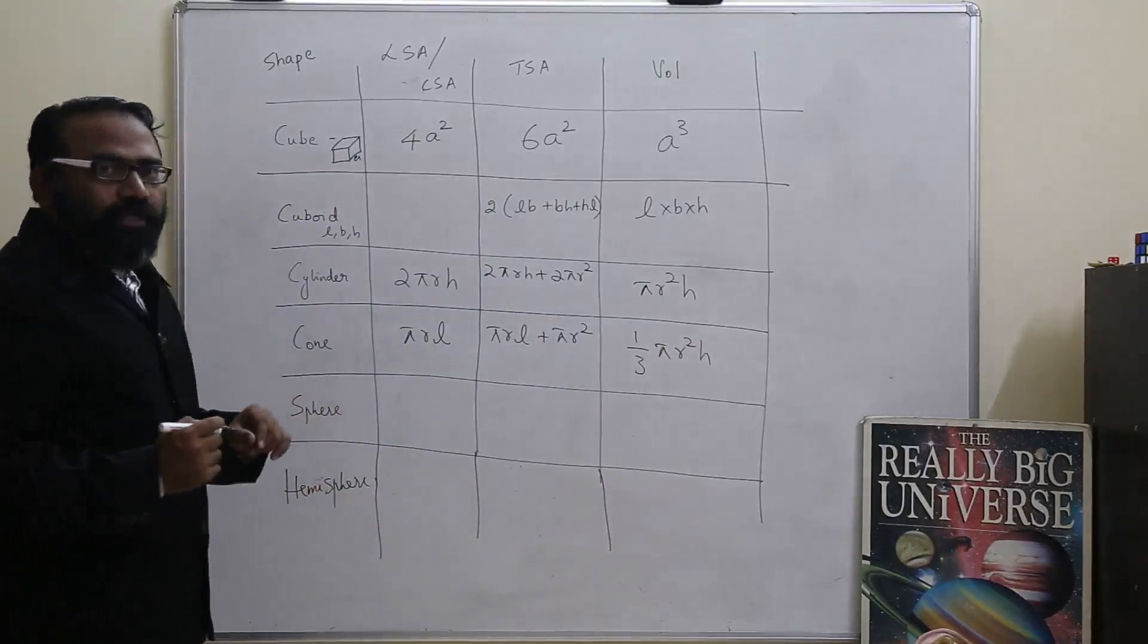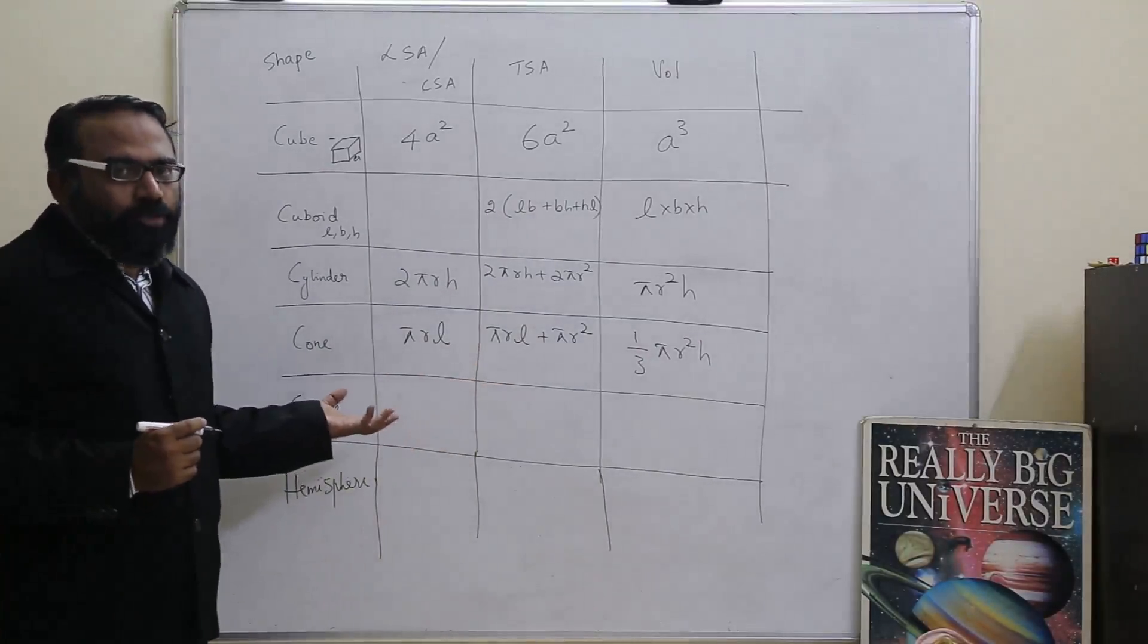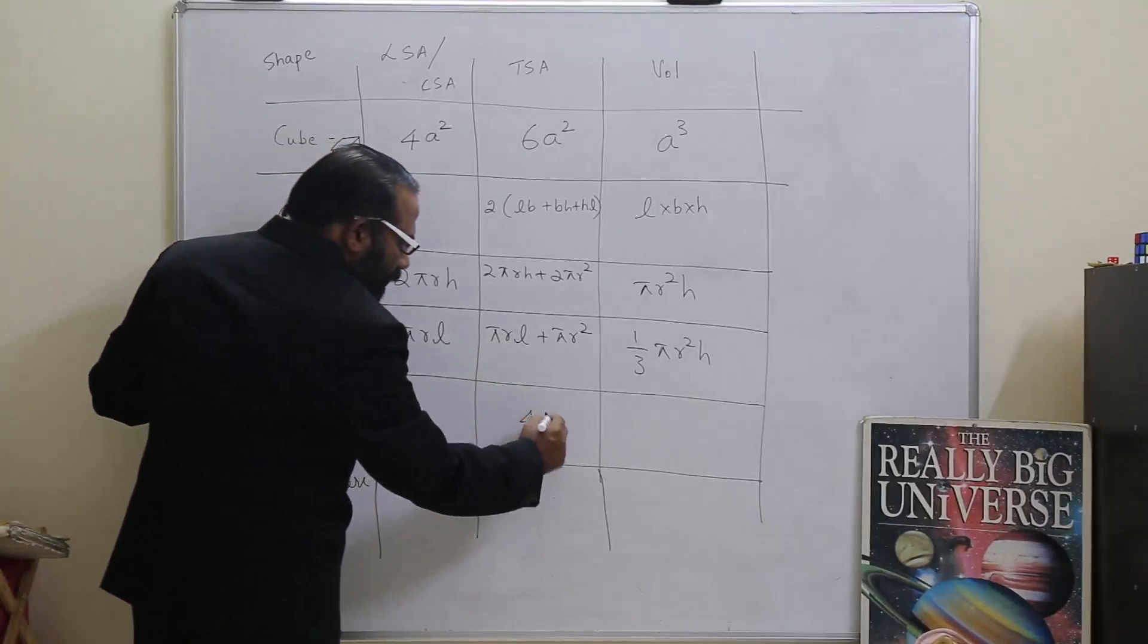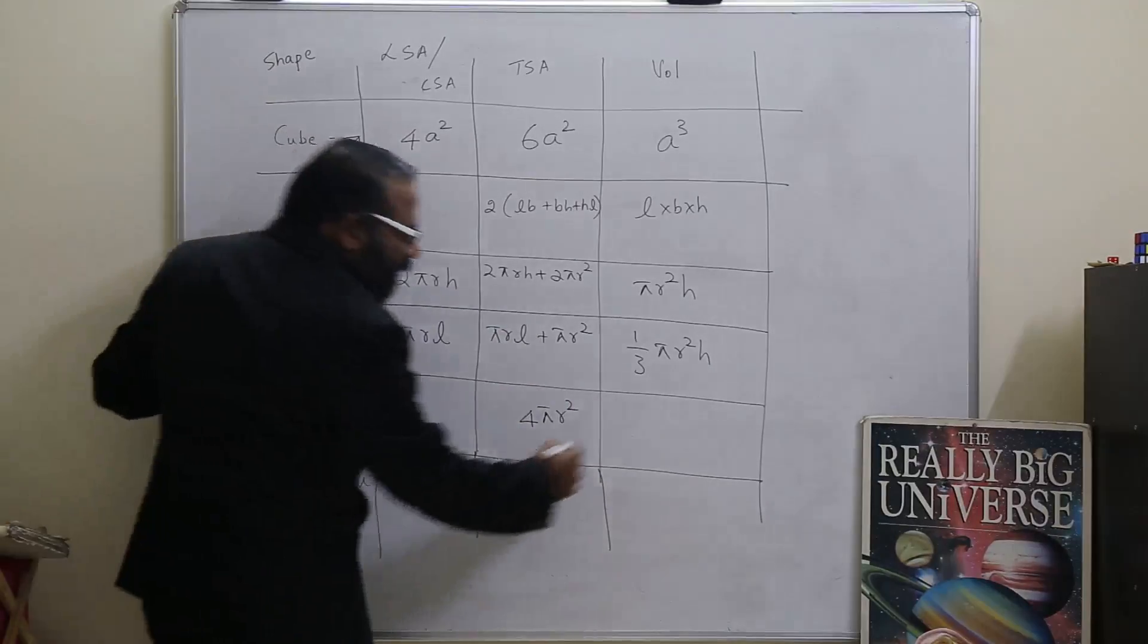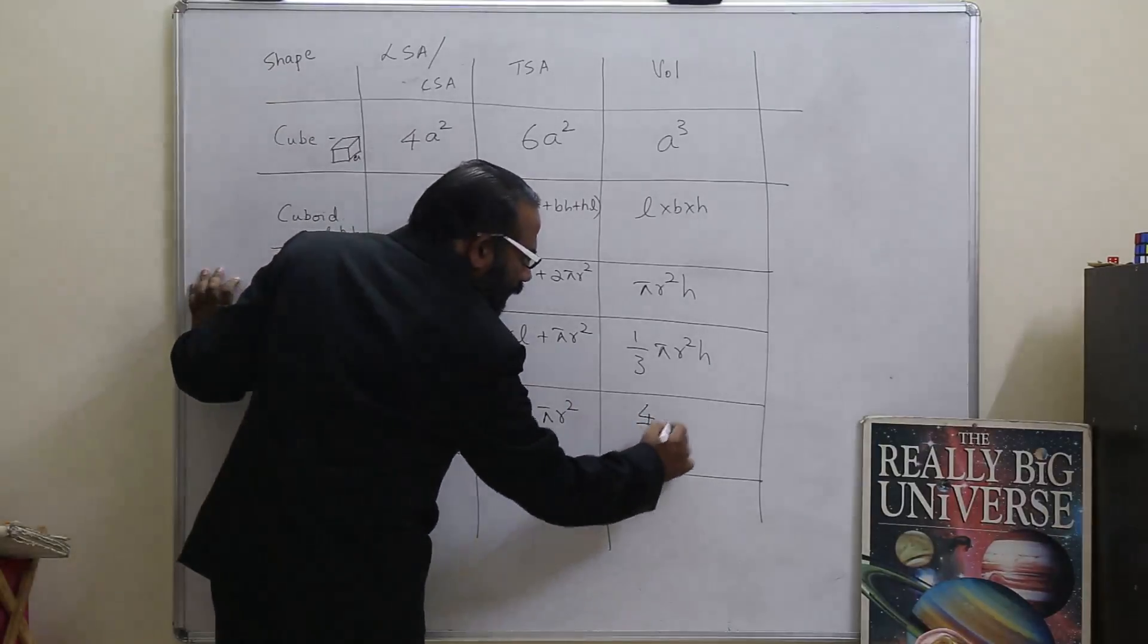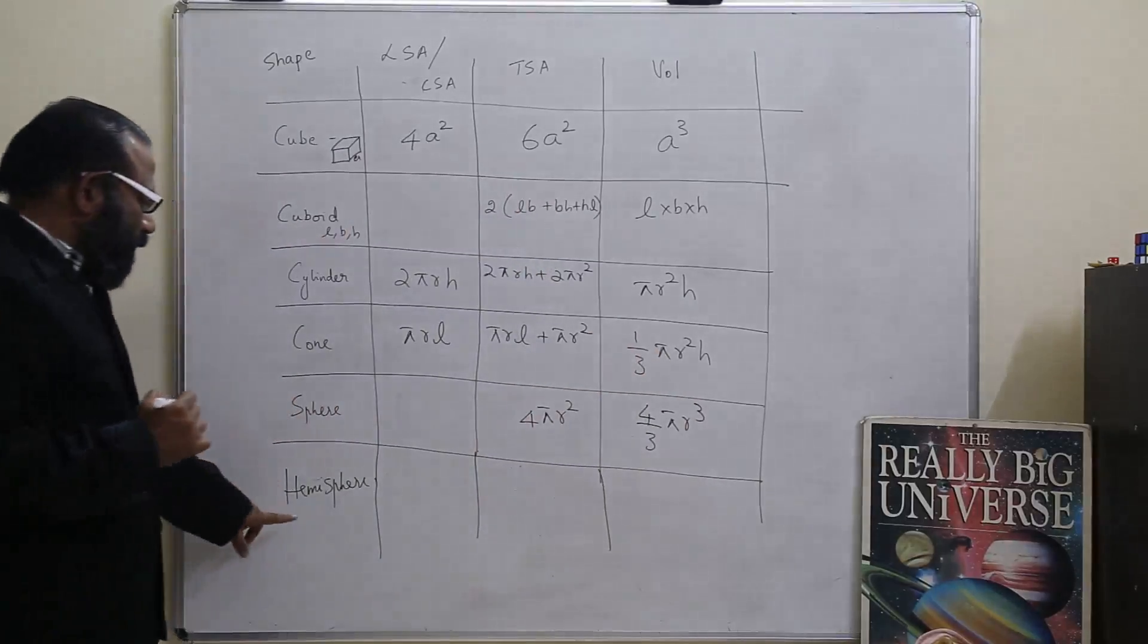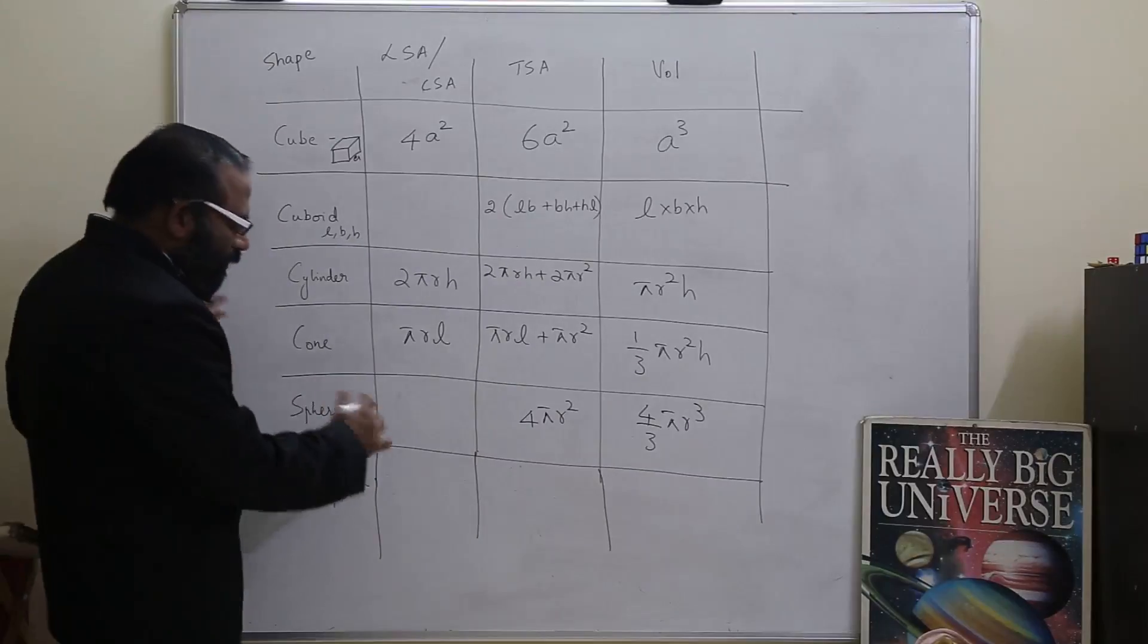The sphere, there's no curved surface area, or specifically it's the same as the total surface area, so that would be 4πr squared. And the volume is 4 by 3 πr cubed. Hemisphere.